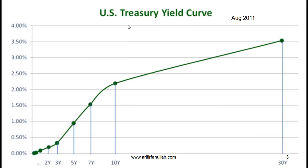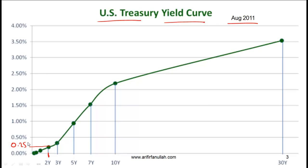Now let's understand the concept of the yield curve, and specifically we are going to look at the US Treasury yield curve. This is the US Treasury yield curve for August 2011, about two months old. The yield curve x-axis is time to maturity. For example, bonds with two years to maturity have a yield of about 0.25%, and bonds with a very low time to maturity have a very low yield.